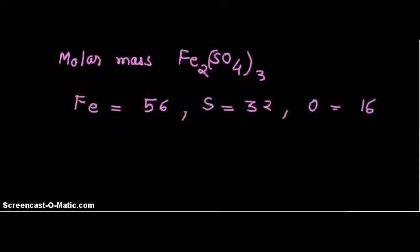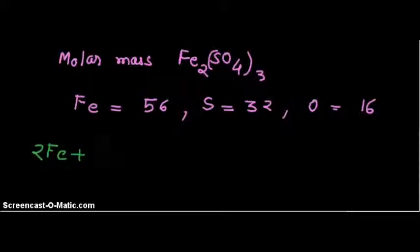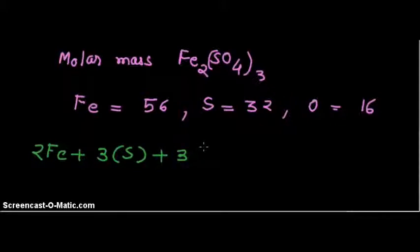Now multiply the number of respective atoms by their atomic masses. We have 2 atoms of Fe, plus 3 atoms of sulfur, and 3 × 4 atoms of oxygen.